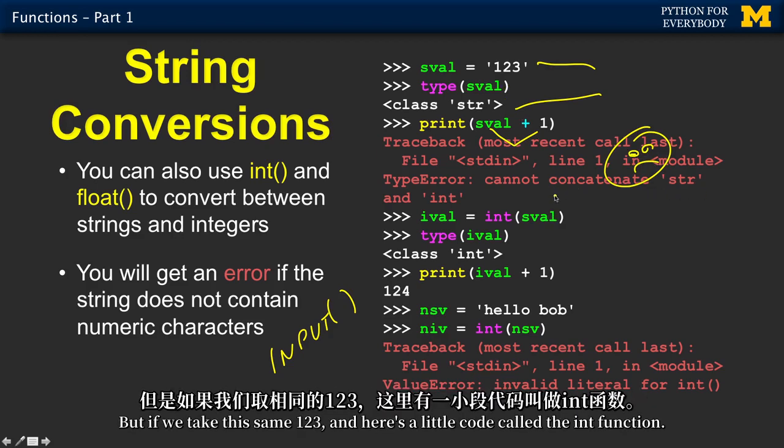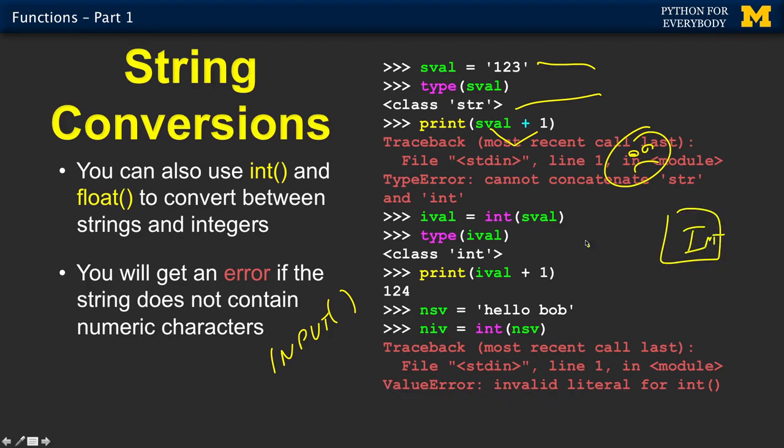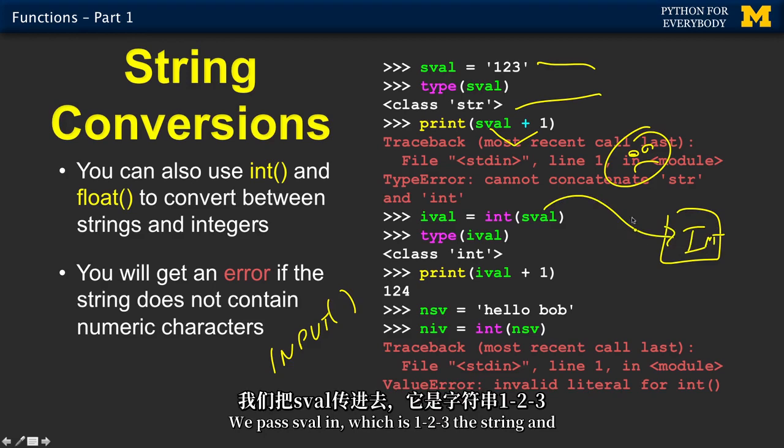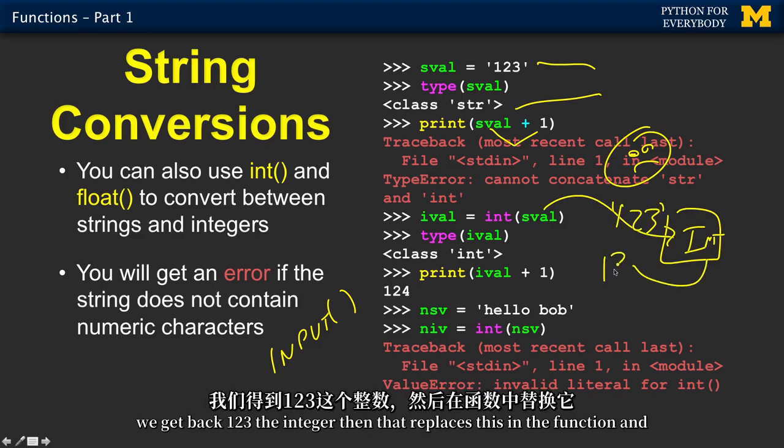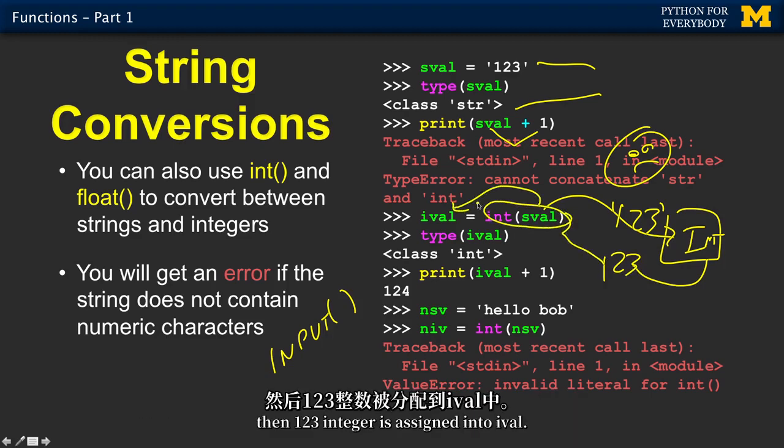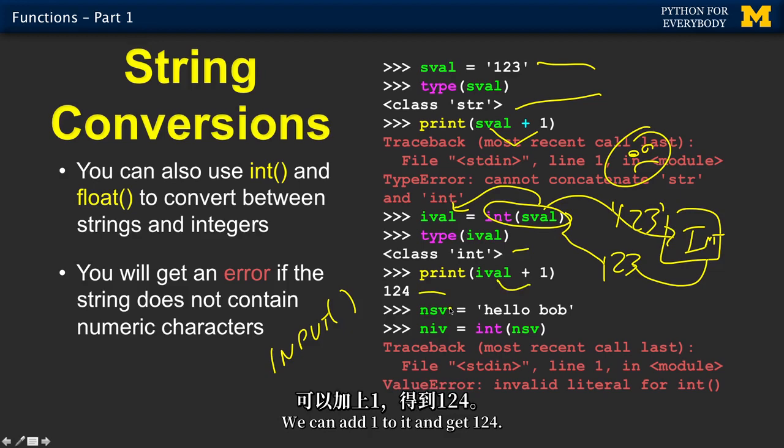But if we take this same 123, and here's a little code called the int function. We pass sval in, which is 1, 2, 3 the string. And we get back 123, the integer. Then that replaces this in the function. And then 123 integer is assigned into ival. We say, hey, what kind of thing is ival? Well, it's an integer. We can add 1 to it and get 124. And this came from a previous chapter.